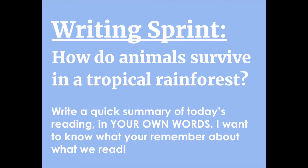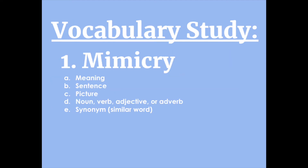Now on to our writing sprint. On a piece of paper or in your notebook, you're going to be completing today's writing sprint to answer the question: how do animals survive in a tropical rainforest? You're going to write a quick summary of today's reading in your own words — I want to know what you remember. Now onto vocabulary study. First, write the word mimicry, then look back into the text to find the meaning of the word. Write the sentence where the word is highlighted in yellow, then draw a picture of the word. Tell me whether the word is a noun, verb, adjective, or adverb. Finally, give me a synonym or a similar word.